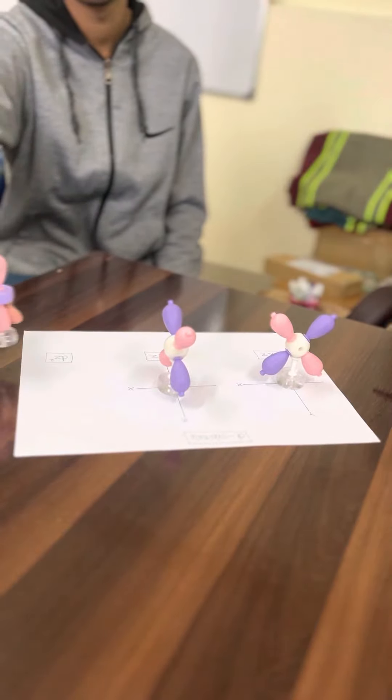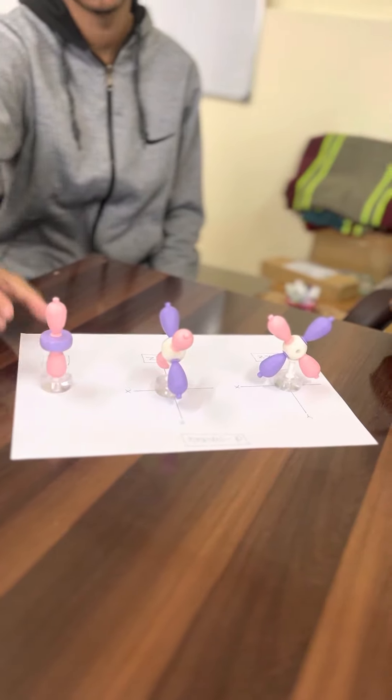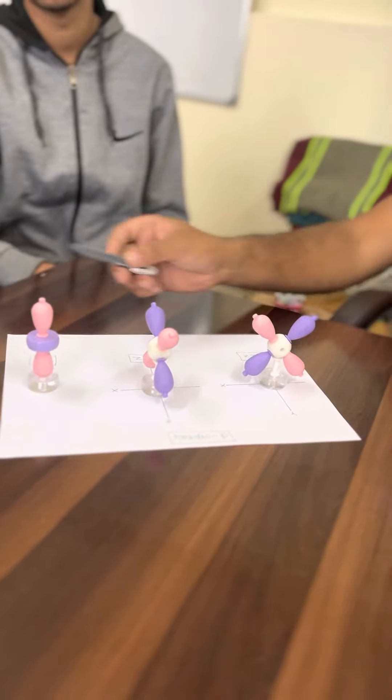And the last one, dz square, which has a unique character of having a ring in the middle. So these are all the different shapes of orbitals: s, p, d, and f orbitals. We will discuss f orbitals in the next video. Thank you.